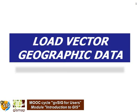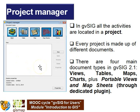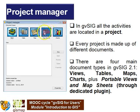Let's start our new session about the view in GVSIG and how to load vector geographic data. We have already seen how we can divide the main window of GVSIG: title bar, menu bar, toolbar, main window, and status bar. Inside the main window we have the project manager. In GVSIG all activities are located in the project, and every project is made up of different documents. The project manager manages all these documents, and in GVSIG there are four main document types: views, tables, maps, and charts, plus several plugins — among them map sheets, for example.